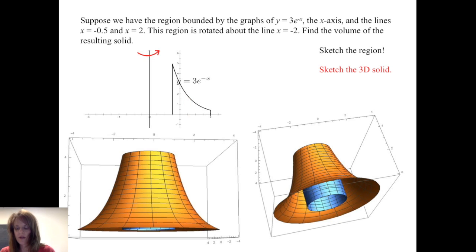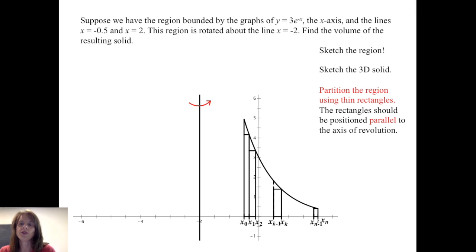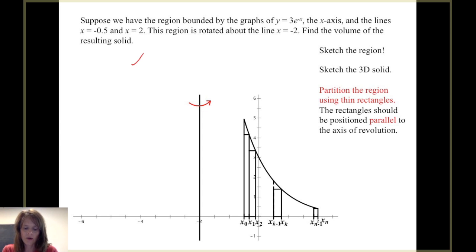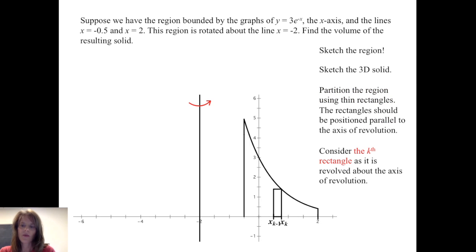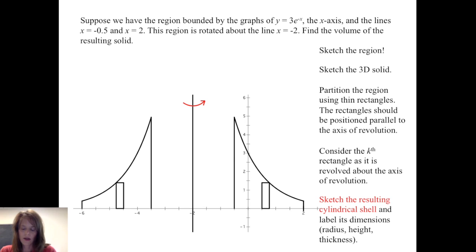After drawing the sketch of the region and the 3D solid, it's helpful to partition the region using thin rectangles. The rectangles need to be positioned parallel to the axis of revolution. Here I've taken my interval where x is between negative one-half and positive 2, and set up a partition with x sub 0 equal to negative one-half, x sub 1, x sub 2, up to x sub n equal to 2. I want to consider what happens to the k-th rectangle as it is revolved around the axis of revolution, sketching the resulting cylindrical shell and labeling its dimensions: radius, height, and thickness.